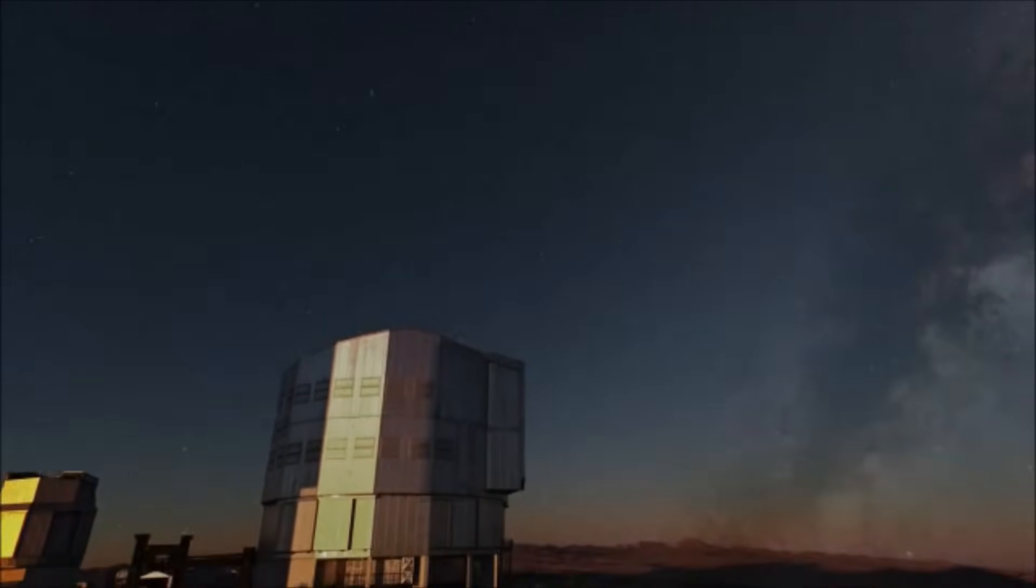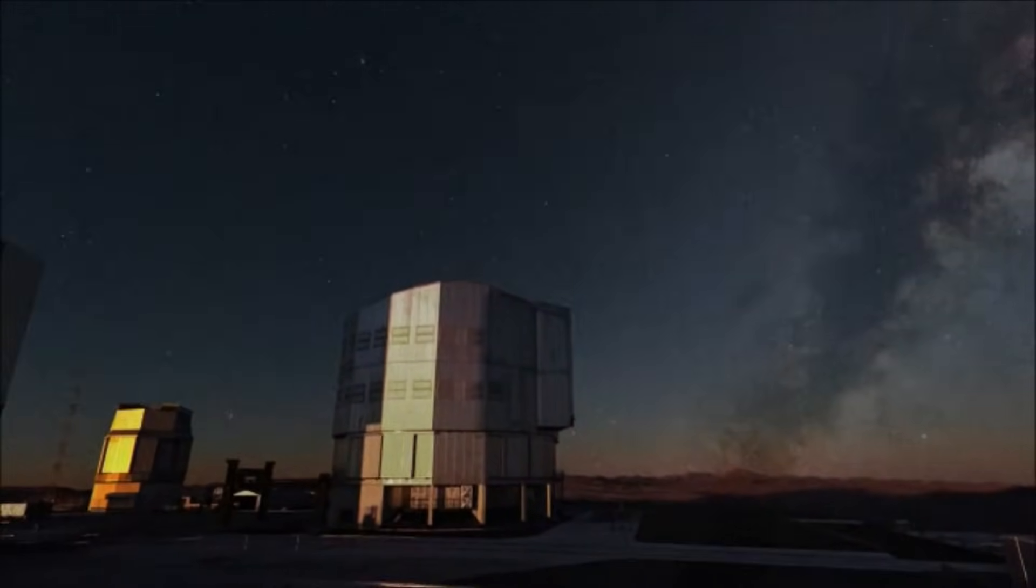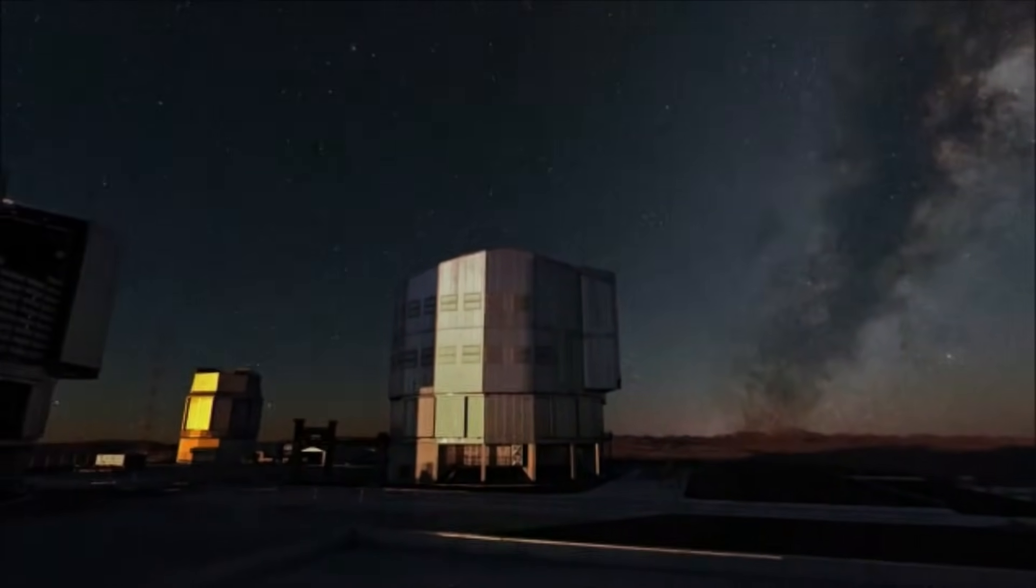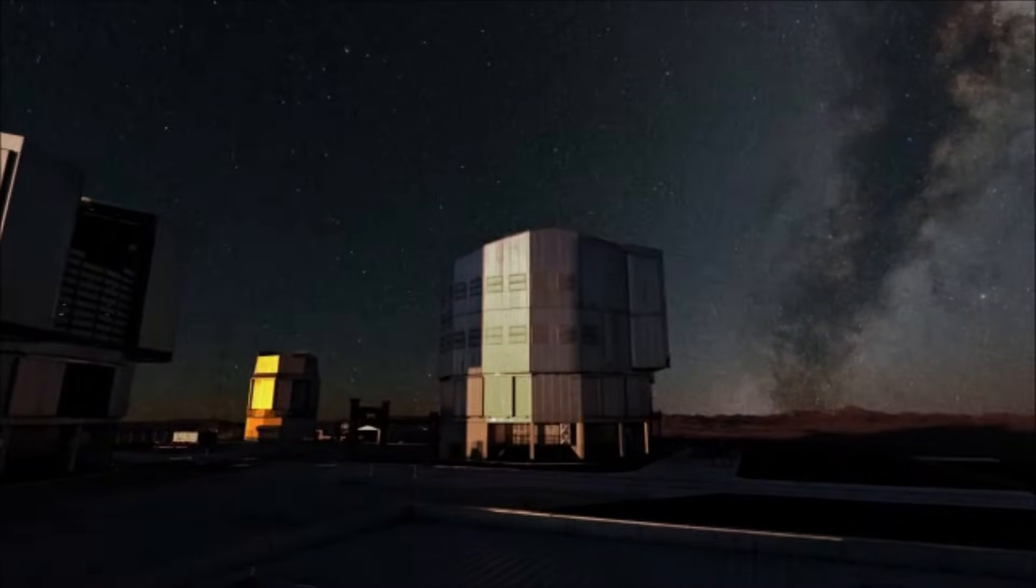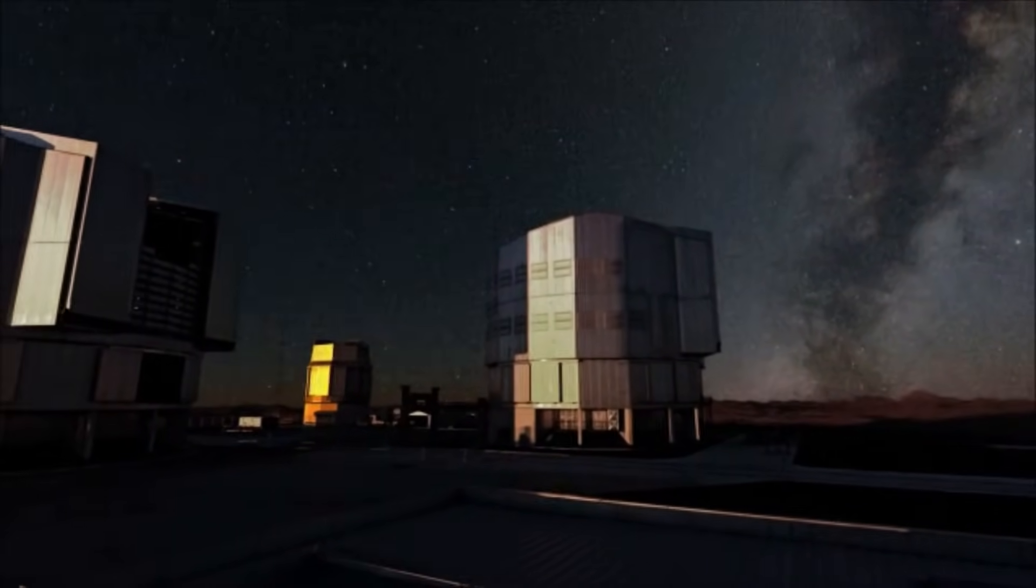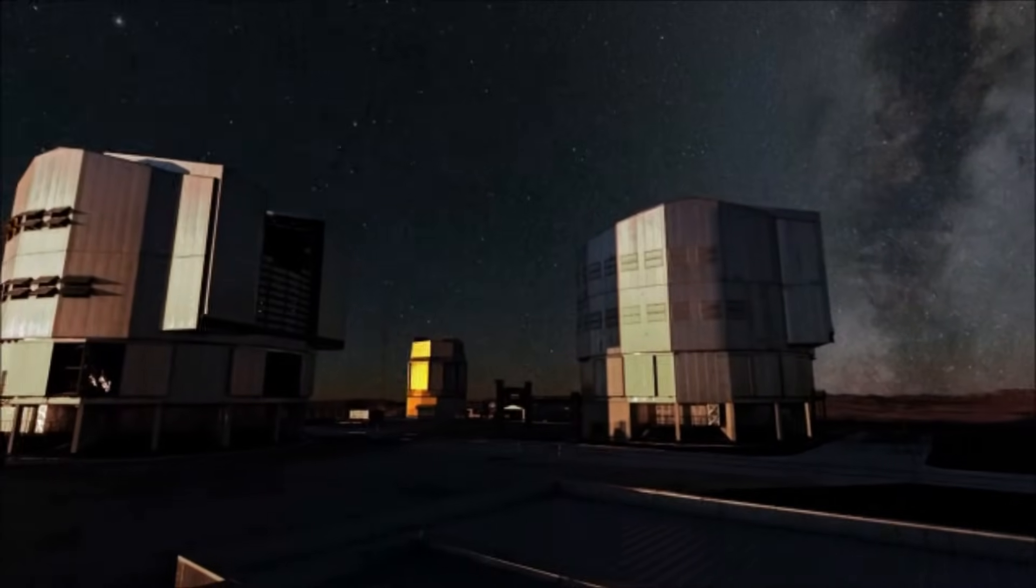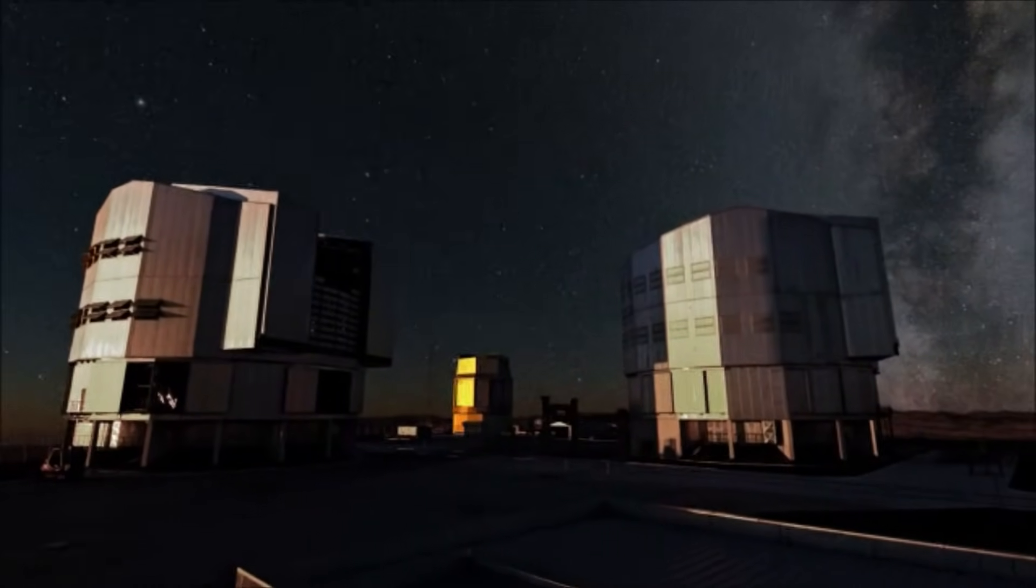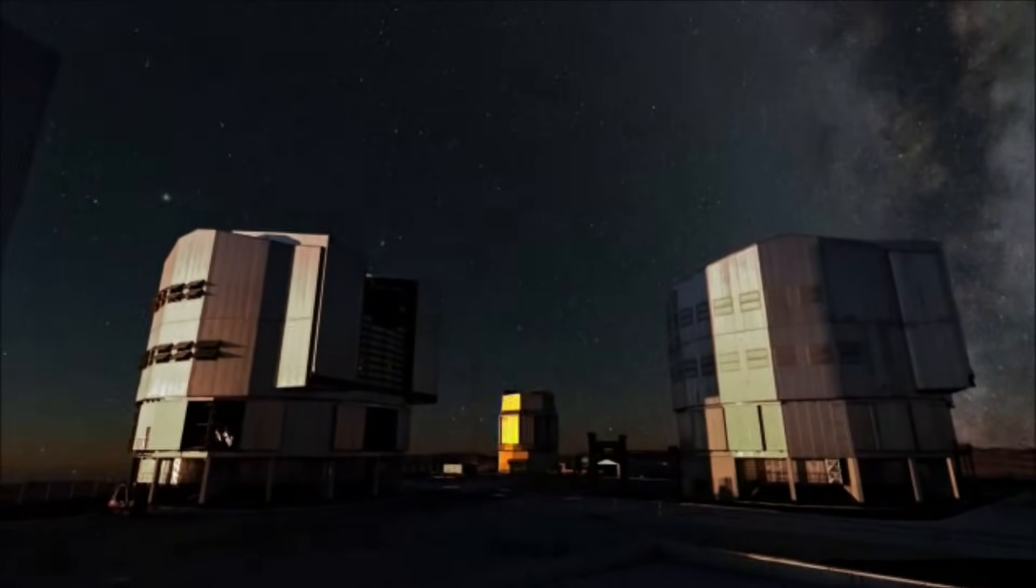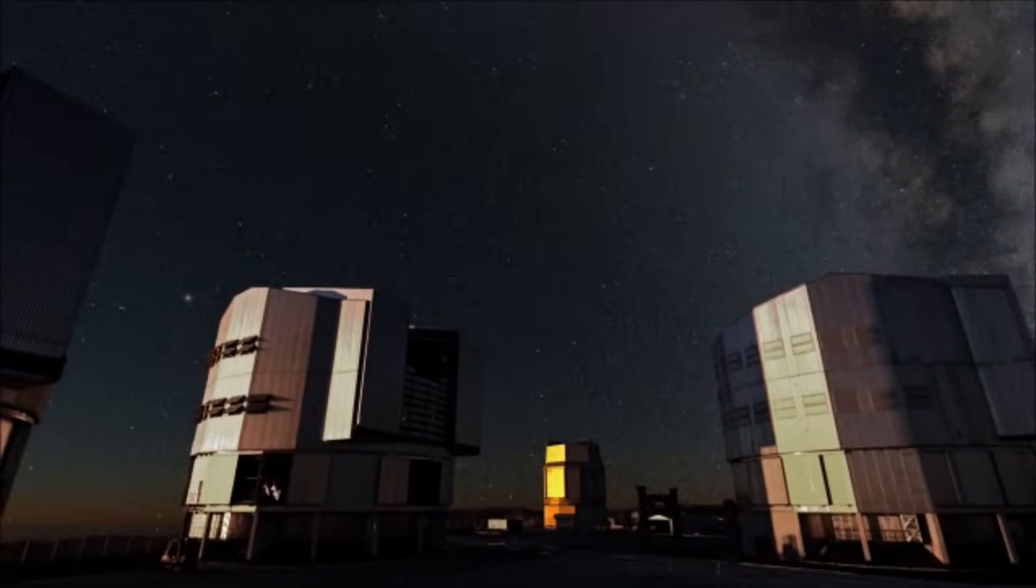On the darkest of nights, far from the lights of cars and cities, something special appears in the sky. A cloudy white stripe of light stretches across the heavens. Ancient peoples thought it looked like a stream of milk spilled across the sky, and so it is called the Milky Way.